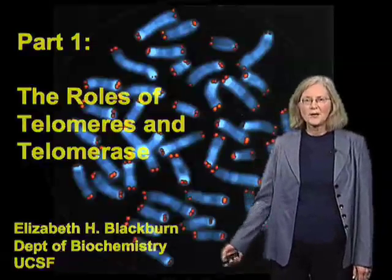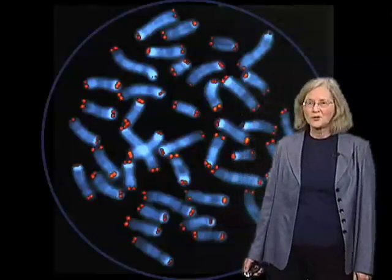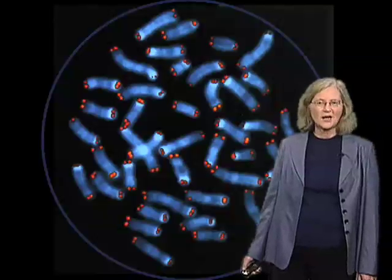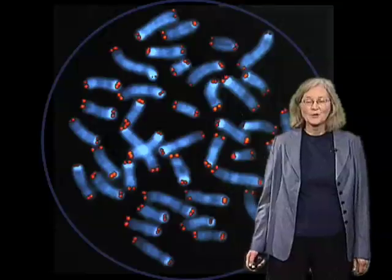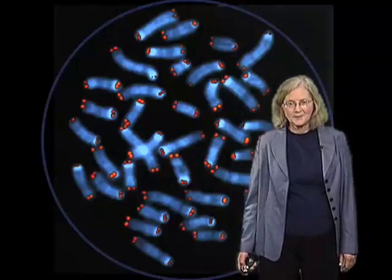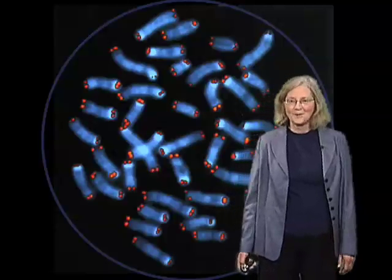If you looked at a cell which is just about to divide, and you looked under the microscope and stained the chromosomes, this is what you would see. Those blue double-sausage-like objects are the human chromosomes, and the DNA is just duplicated, which is why they look double. If you look closely, you can see red spots — two red spots at the ends of every double chromosome pair. These red spots are a molecular probe lighting up the telomeric DNA found in common at all of the chromosome ends. I'm going to tell you a lot about that telomeric DNA.